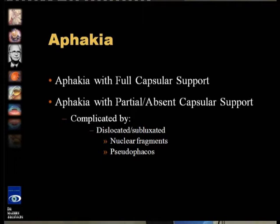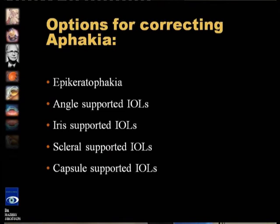Aphakia can be classified into two major groups on which we will base our discussions: aphakia with full capsular support, and aphakia with partial or absent capsular support. This aphakia may be further complicated by dislocated or subluxated nuclear fragments or pseudophakos itself. Options for correcting aphakia include anterior-supported IOLs, iris-supported IOLs, scleral-supported IOLs, and capsule-supported IOLs, as well as other techniques like epikeratophakia. We will touch on all others but I will basically concentrate on posterior chamber IOLs in sulcus or in capsule.